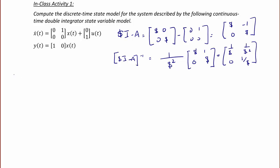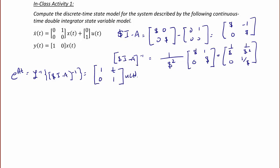Then we find e to the At, which is the inverse Laplace transform of (sI minus A) inverse, which equals [1, t; 0, 1]. So the G matrix for the discrete time system is e to the AT, where T is the sampling period, giving G equals [1, T; 0, 1].